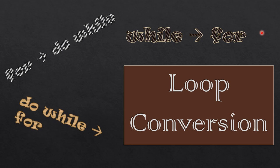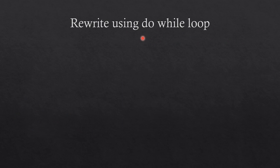For example, if a for loop is given, they'll ask you to convert it to do-while. If a while loop is given, they'll ask you to convert it to for loop. And if there is a do-while loop, they'll ask you to rewrite it to for loop. So you are going to see three examples.